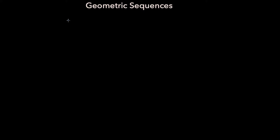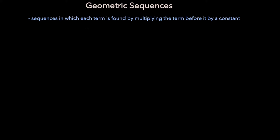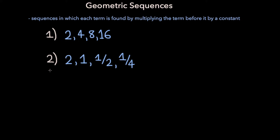In this video, we will be going over geometric sequences. Geometric sequences are sequences in which each term is found by multiplying the term before it by a constant. By this definition, the following two sequences are geometric sequences.